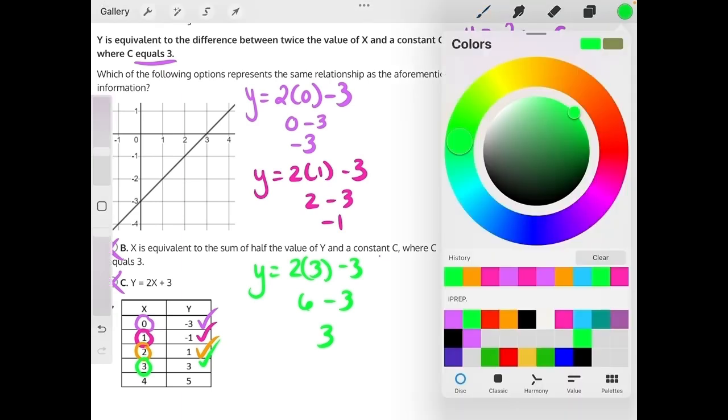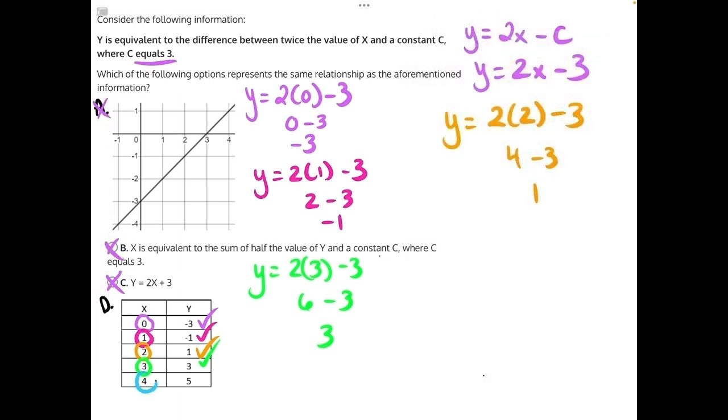And finally, y is equal to 2 times 4 minus 3. 2 times 4 is 8 minus 3 is equal to 5, matching the table and making answer choice d our correct answer.